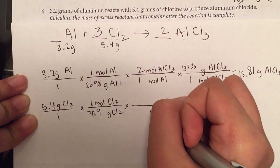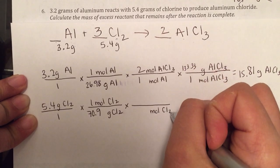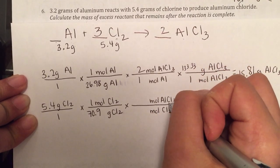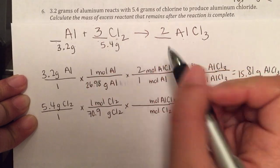Go straight into our mole ratio. Now that we have moles, moles of chlorine to moles of aluminum chloride. That is a 3 to 2 ratio.